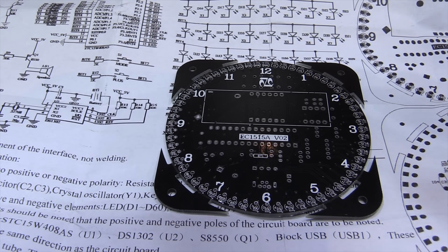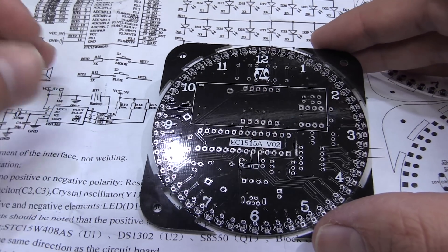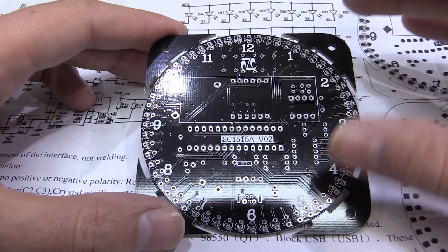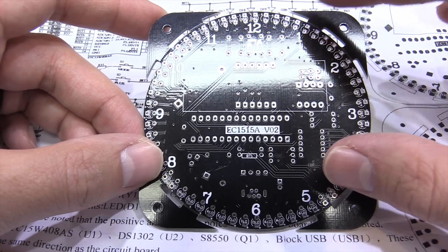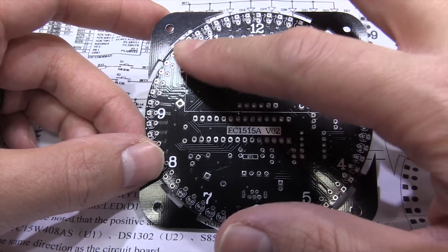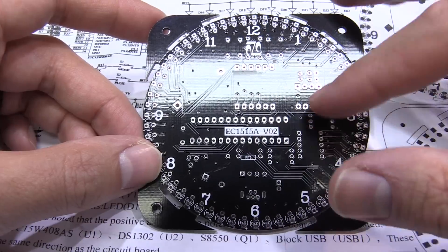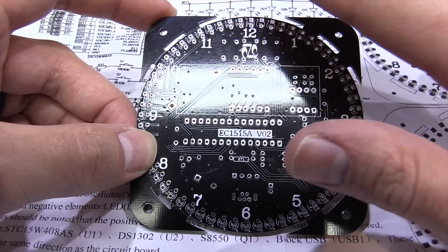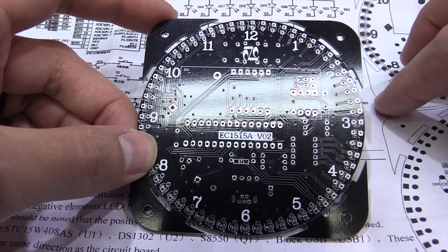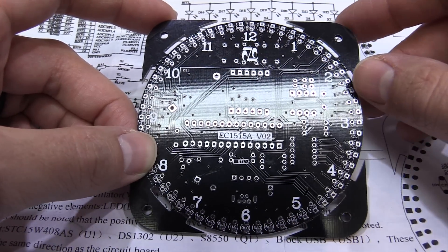So when approaching a build like this you'd normally start with the smallest components first and then work your way up. I'm going to start with the resistors and then I'll focus on these LEDs around the edge so I'm going to put all the LEDs in and then flip the board over and hopefully the LEDs will sit flat against the PCB once they're against the desk and then I'll just be able to solder them all in.